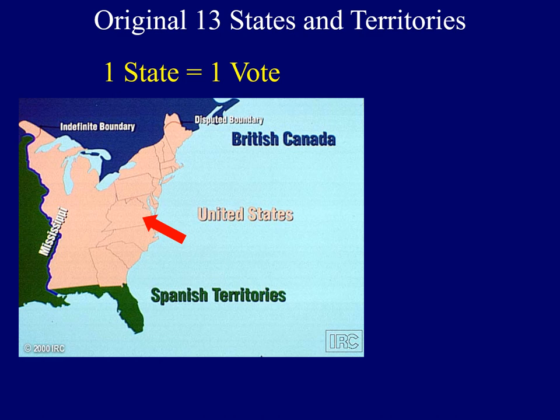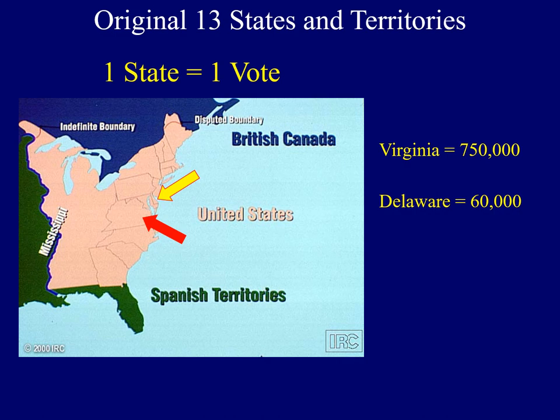This meant that a large state like Virginia, with a population of about 750,000 people, had as much political power and clout as a state like Delaware, with only 60,000 people. Was this going to be a nation based upon the power of the people or the power of individual states?